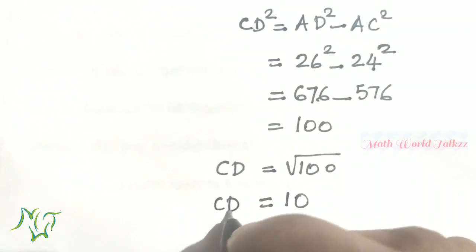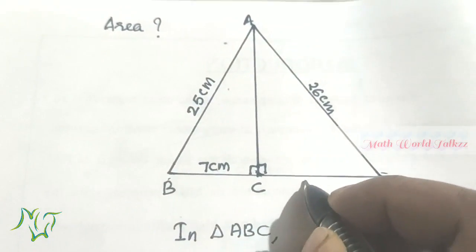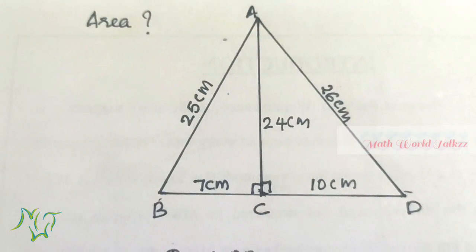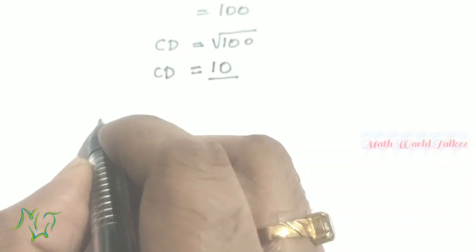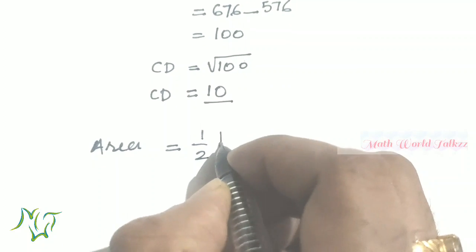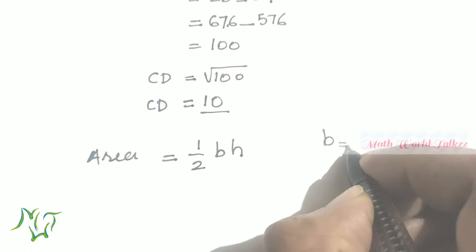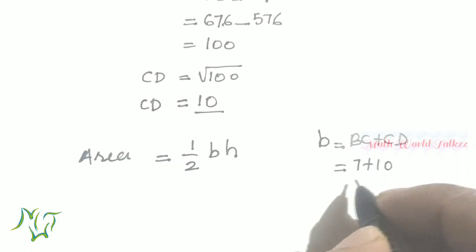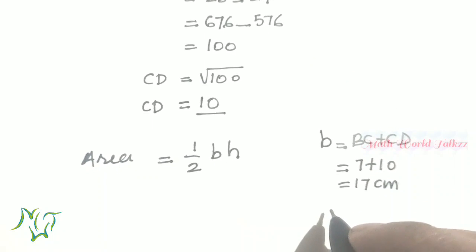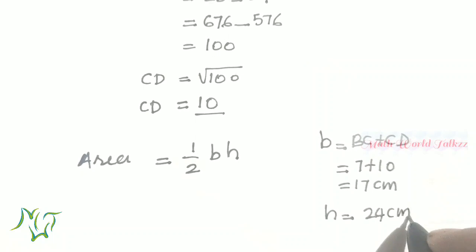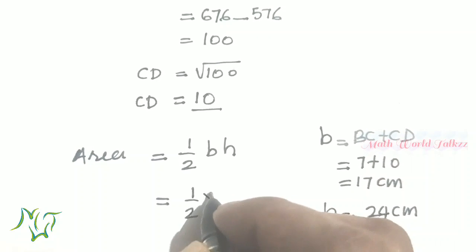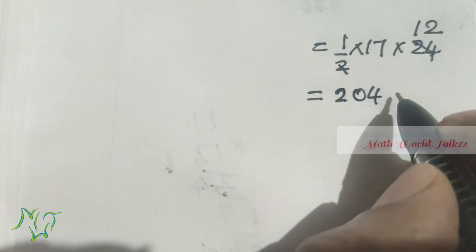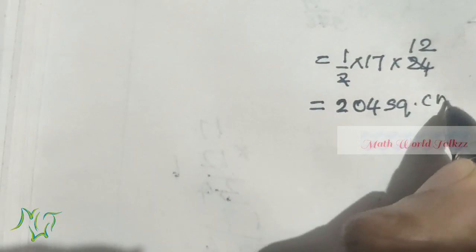So we got CD = 10 and the height is 24 centimeters. Now we can find the area. Area = half × base × height. The base = BC + CD = 7 + 10 = 17 centimeters. Height h = 24 centimeters. So area = half × 17 × 24 = 204 square centimeters. That is the area of the triangle.